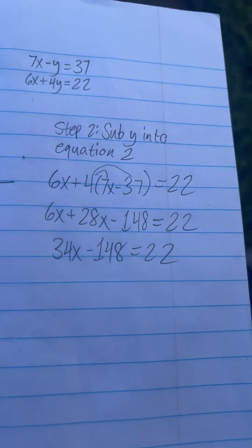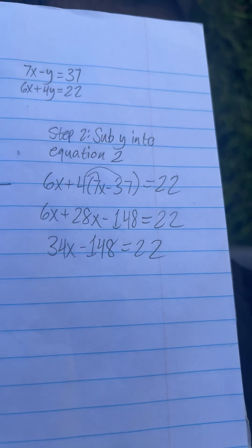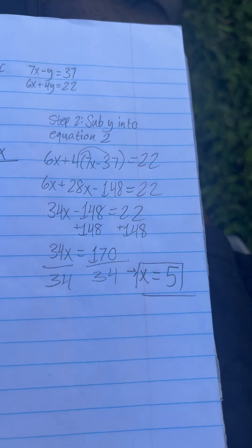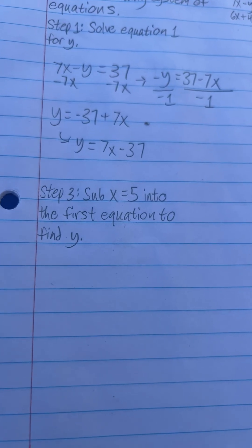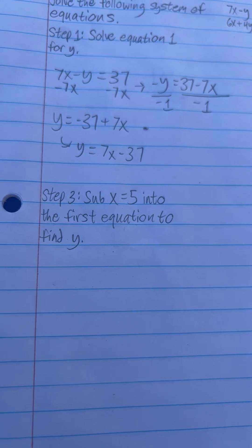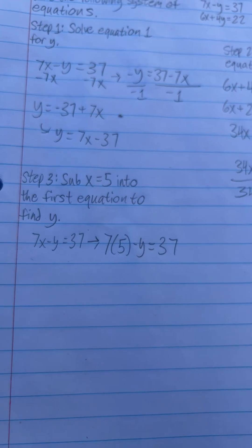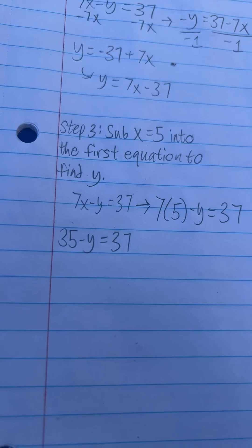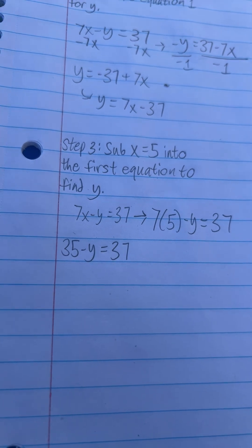So you simplify it, add your common terms, and you isolate x. Now step 3 is to sub x equals 5 into the first equation to find y. That'll give you 7 times 5 minus y equals 37. Now you got 35 minus y equals 37.